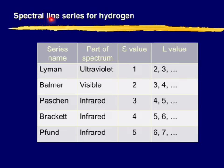Spectral line series for hydrogen. Five series have been discovered. Each one has a name. And this one here is ultraviolet series. And visible. All these three are infrared.